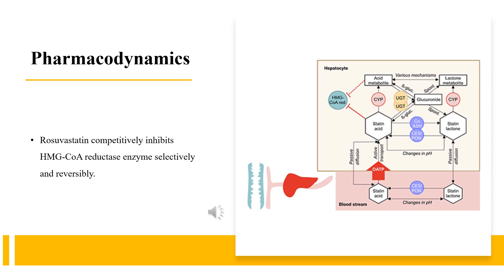Let's go deeper into the detailed information of rosuvastatin. Pharmacodynamics: Rosuvastatin competitively inhibits HMG-CoA reductase enzyme selectively and reversibly. This enzyme plays an important role in converting HMG-CoA to mevalonic acid in the cholesterol biosynthetic pathway. Rosuvastatin therefore decreases hepatic sterol synthesis, which in turn leads to a decreased concentration of hepatocellular cholesterol. Hepatocytes respond by increasing synthesis of LDL receptors to enhance hepatic LDL reuptake from the circulation, resulting in increased fractional catabolism of LDL, which reduces serum LDL-C and total cholesterol. Statins also reduce production of ApoB, leading to reduced hepatic output of VLDL-C and triglycerides.